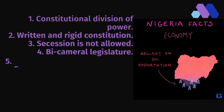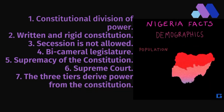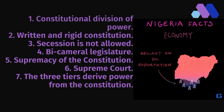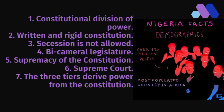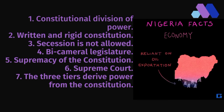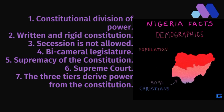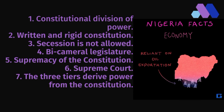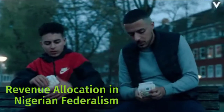Now let's look at the features of Nigerian federalism. Among the various characteristics are: constitutional division of power, a written and rigid constitution, cessation is not allowed, Nigeria has a bicameral legislature as a federal state, there is supremacy of the constitution and the Supreme Court, and the three tiers of government derive their power from the constitution.